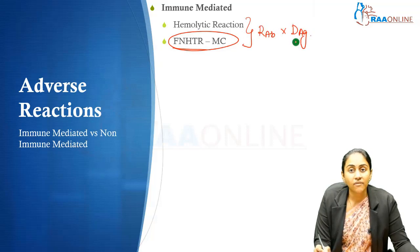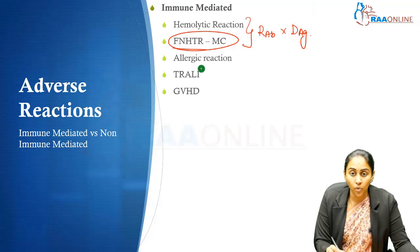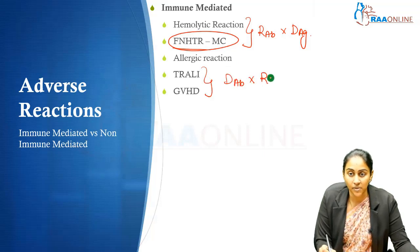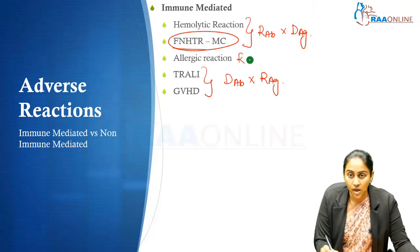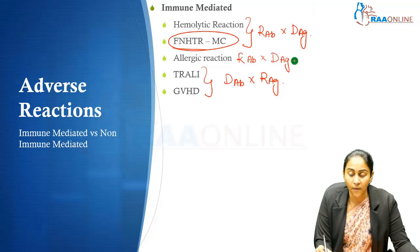Then you have GVHD and TRALI — in both of these instances it is the donor antibodies which act against the recipient antigen. Then of course you have allergic reactions, where again it is the recipient antibodies which act against the various antigens present in the donor's plasma.